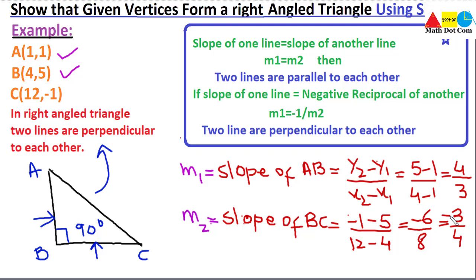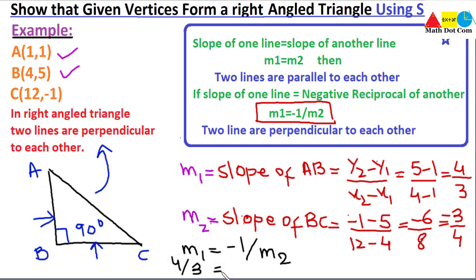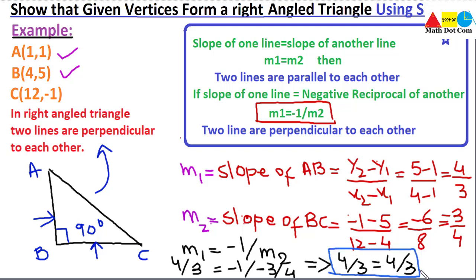Now let's check whether these two slopes satisfy the perpendicularity condition: m1 equals minus 1 over m2. We have m1 = 4/3 and minus 1 divided by m2 = minus 1 divided by (minus 3/4) = 4/3. Since both sides equal 4/3, the condition is satisfied. This confirms that lines AB and BC are perpendicular to each other, as their slopes — 4/3 and minus 3/4 — are negative reciprocals of each other.